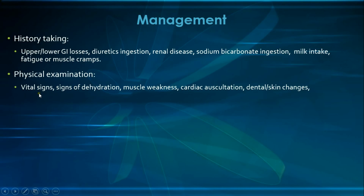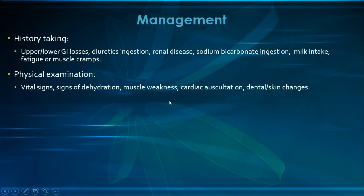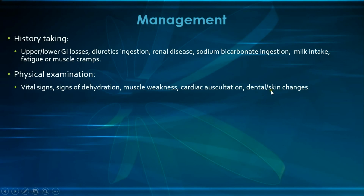On physical examination, assess vital signs for compensatory hypoventilation, blood pressure and heart rate for hypovolemia from GI losses or diuretics, and signs of dehydration such as decreased skin turgor, decreased urine output, postural hypotension, or decreased JVP. Examine for muscle weakness and auscultate the heart for arrhythmias, both indicating hypokalemia. Also look for dental changes and dorsal hand calluses (Russell's sign) in eating disorders such as bulimia nervosa, and lanugo in anorexia nervosa.